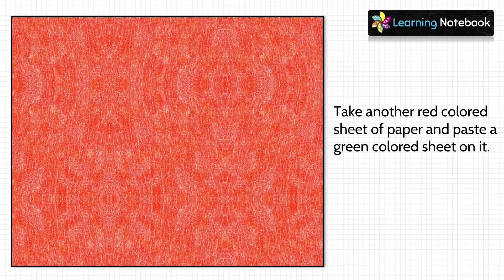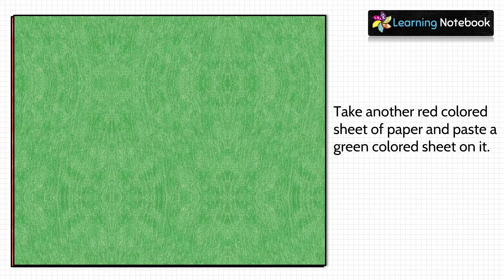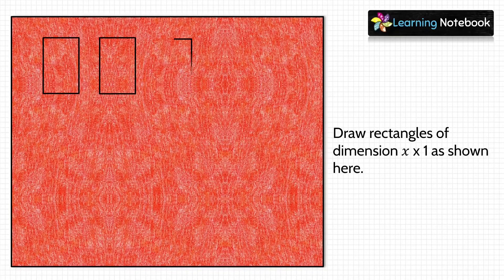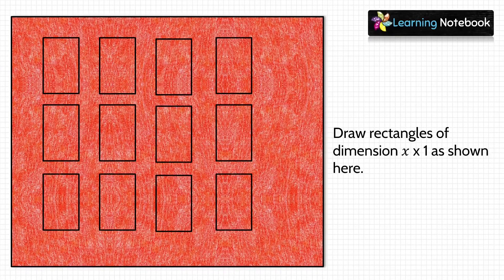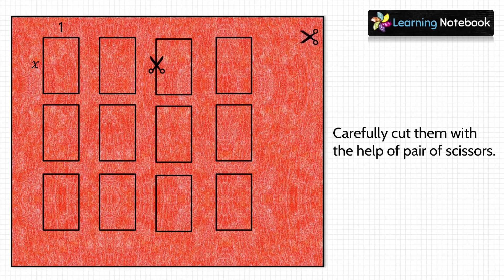In the next step, take another red colored sheet and paste a green colored sheet on it. Now draw rectangles of dimension x×1 on this sheet as shown here. Then again, carefully cut out these rectangles with the help of a pair of scissors.